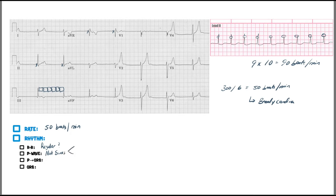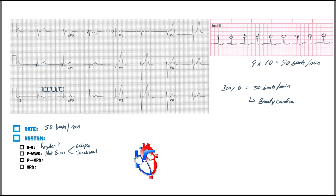No P wave in lead two or AVR means this is definitely not sinus. If it's not sinus, it comes down to two things: either some type of ectopic rhythm or a junctional rhythm. The SA node is located near the superior vena cava in the right atrium. If the SA node is no longer functioning, the AV node can become the pacemaker, firing at a rate of 40 to 60 beats per minute — which fits right around our 50 bpm.